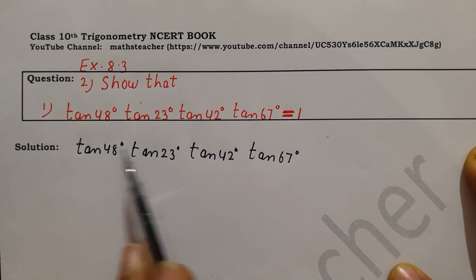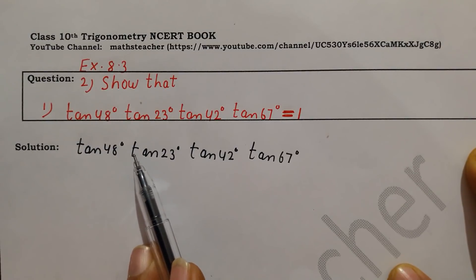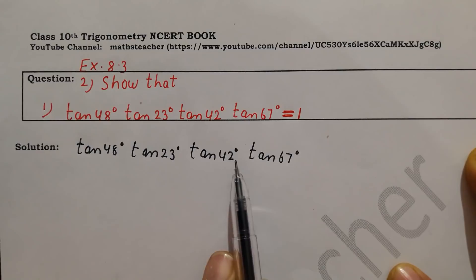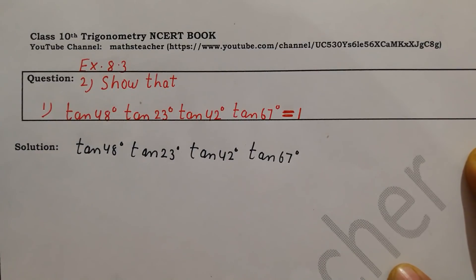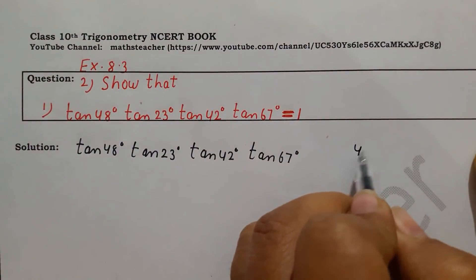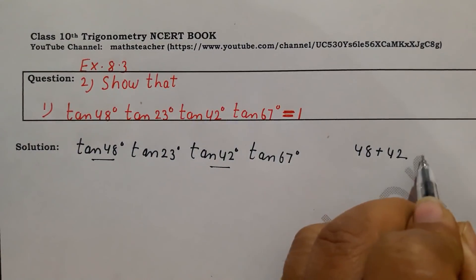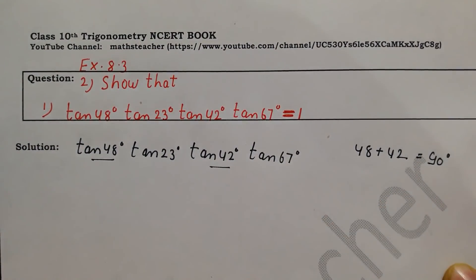Now we have to find simple angles whose values we know. So which are the complementary angles? We have to check these 4 angles to find which are complementary — that is, which pair sums to 90°. We check 48 and 42: 48 plus 42 equals 90°.